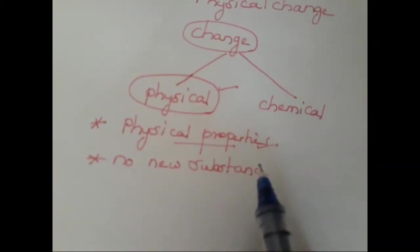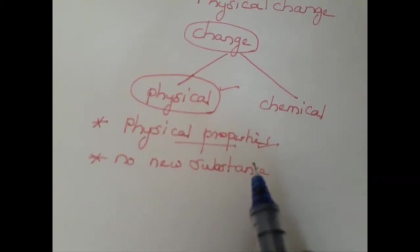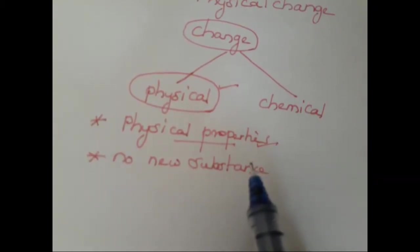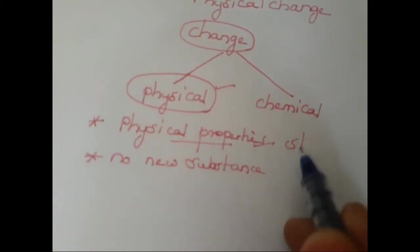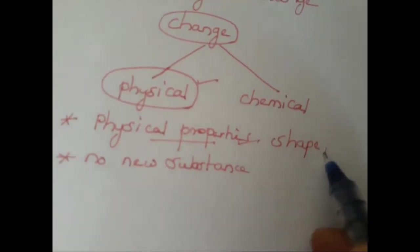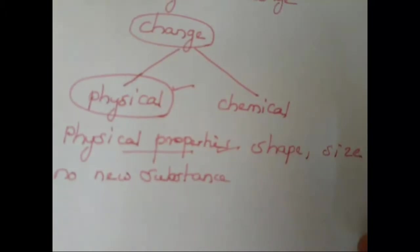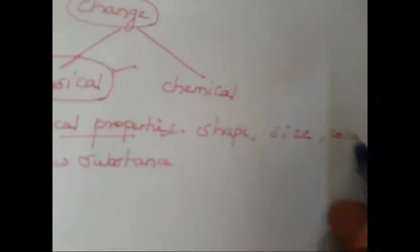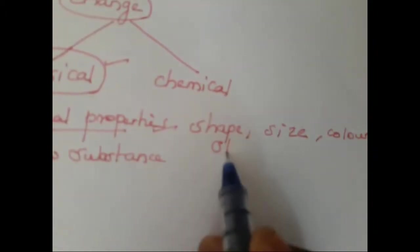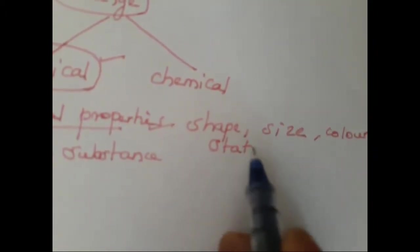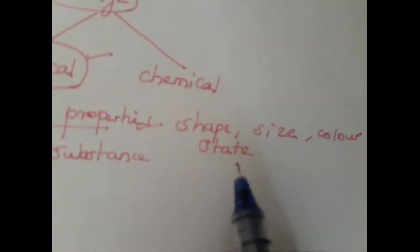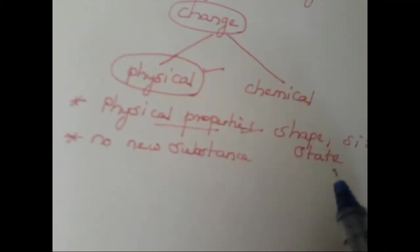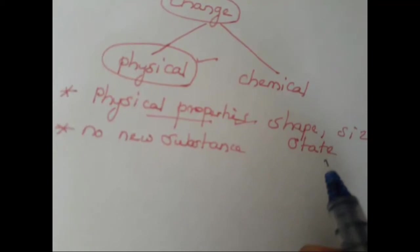Now you should know what is meant by a physical property. The shape, size, color, and state of a substance are called physical properties. So: shape, size, color, and state of a substance are called physical properties. Now let us see a few examples of physical changes.